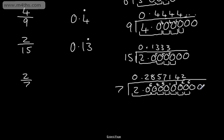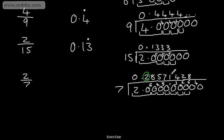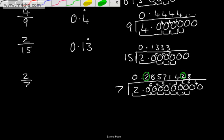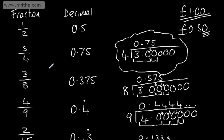Does 7 go into 30? Yes, 4 times, remainder 2. Does 7 go into 20? Yes, twice, remainder 6. Does it go into 60? Yes, 8 times, remainder 4. We can see this is a recurring decimal. The pattern starts with 2 and continues: 0.285714, 285714, and so on. So we write this as 0.285714 with the pattern from 2 to 4 recurring — six digits repeating. And that's some brief work converting fractions to decimals.